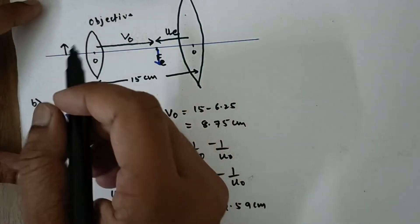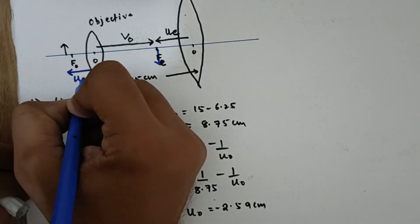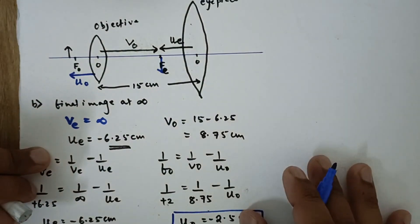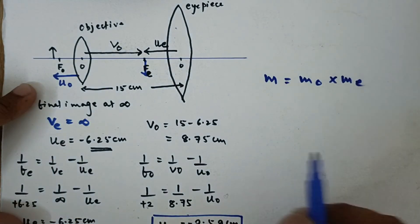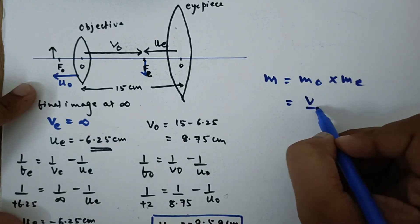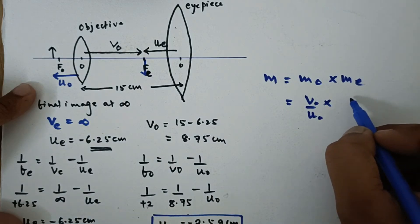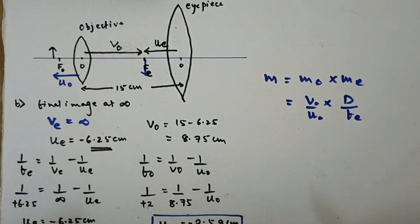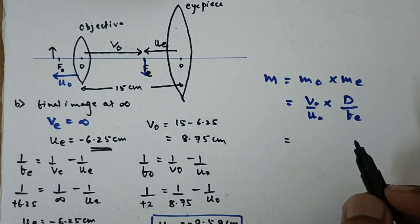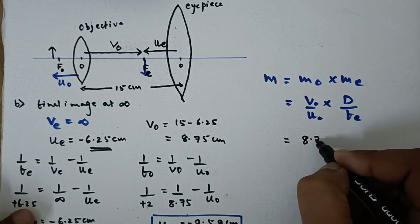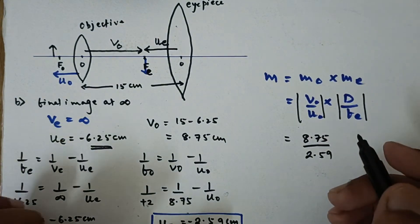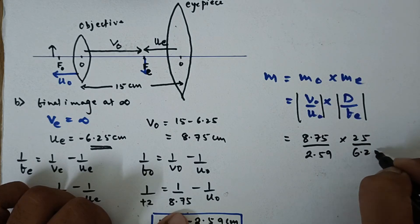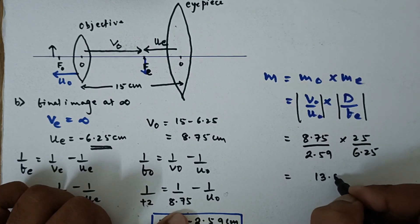For part B, magnification equals magnification of objective multiplied by magnification of eyepiece. Magnification of the objective is v upon u, and for the eyepiece when image is at infinity it is D upon f_e. Substituting: v_o is 8.75, u_o is 2.59, D is 25, and f_e is 6.25. Taking the modulus, we get the overall magnification as approximately 13.51, which is the answer.